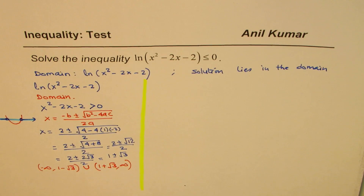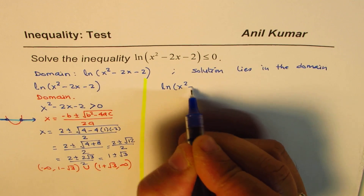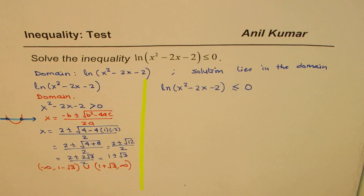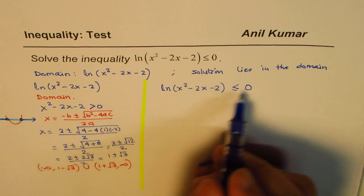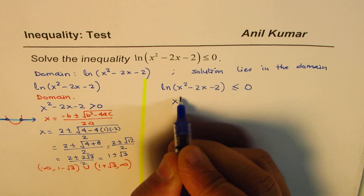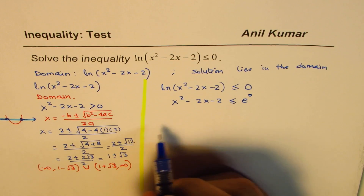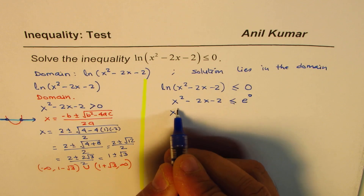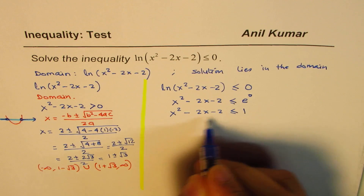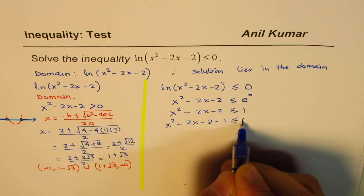Now let's solve the inequality ln(x² - 2x - 2) ≤ 0. Since ln is the inverse of the exponential function, we can write this as x² - 2x - 2 ≤ e⁰. Anything to the power of 0 is 1, therefore x² - 2x - 2 ≤ 1. Bringing 1 to the left side, we get x² - 2x - 2 - 1 ≤ 0.